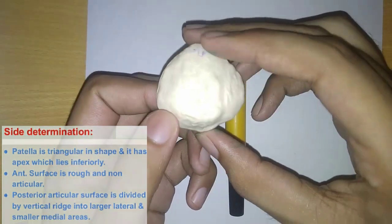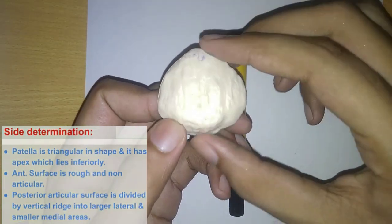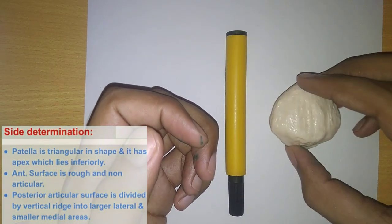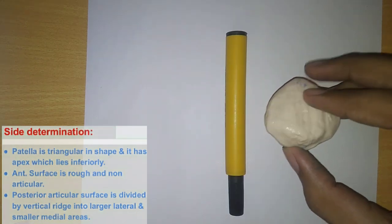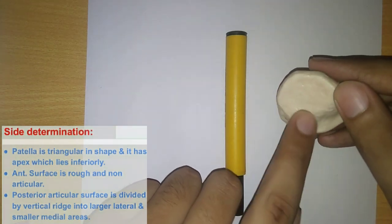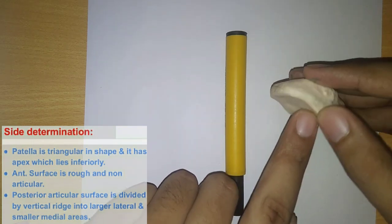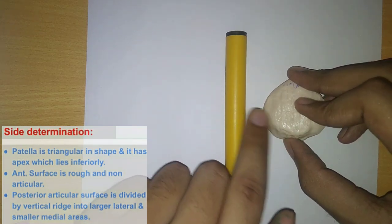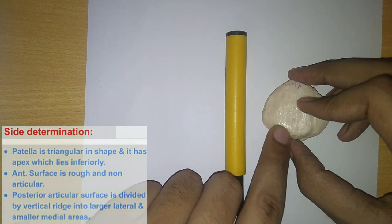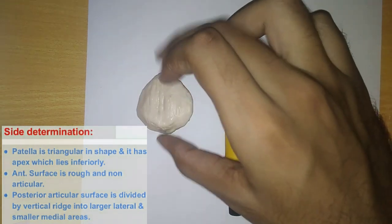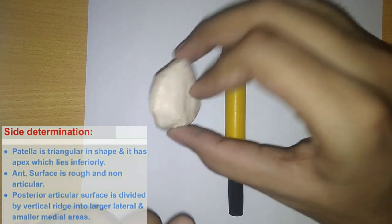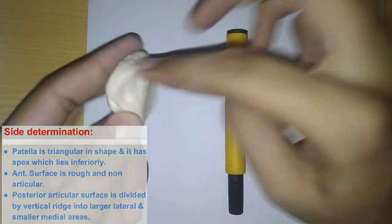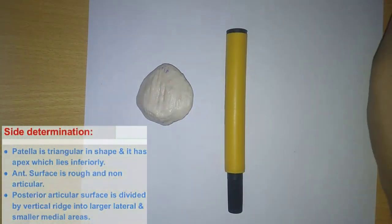Assuming this bone is a right-side bone, I'm placing it on the right side to check if the points apply. The larger area should lie laterally, but here it lies towards the midline, so this is not the ideal position. Transferring the bone to the other side, the larger area is now lateral and the smaller medial area lies towards the midline — this is the ideal position, identifying the bone as a left-side bone.